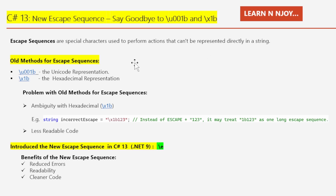Before C# 13, we had two main ways to represent the escape character — old methods for escape sequences. Number one: \u001b, which is the representation in unicode format. Number two: \x1b, which is a representation in hexadecimal format. While both methods work, they can sometimes lead to confusion.